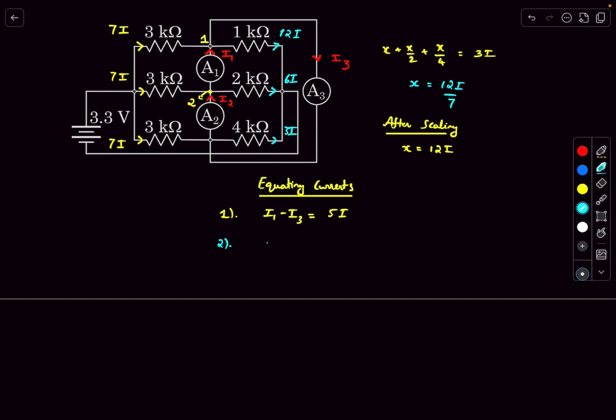So we get i1 minus i2 equals i. Now for the third equation, writing the KCL at this junction will give you a redundant equation. Basically if you figure out that equation, that is nothing but the addition or subtraction of these two equations.